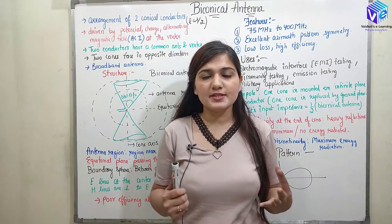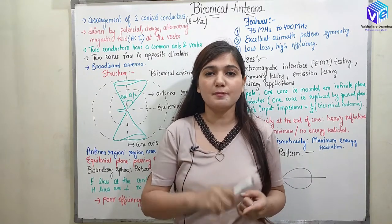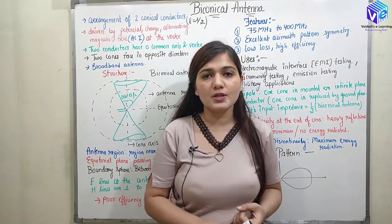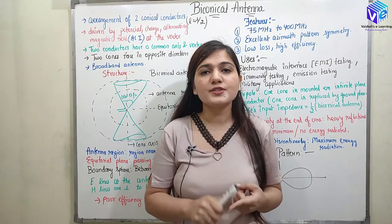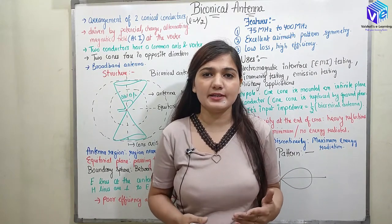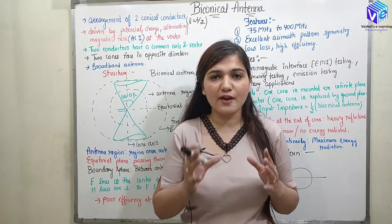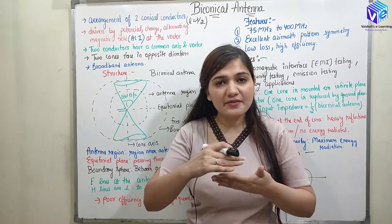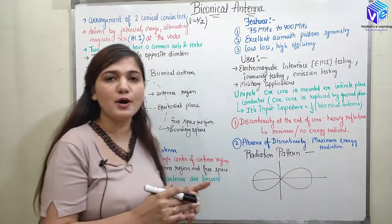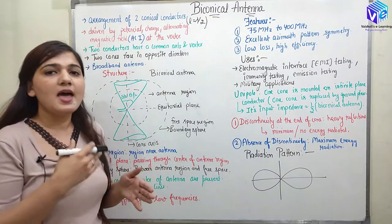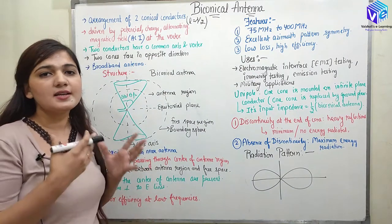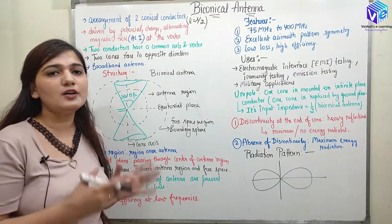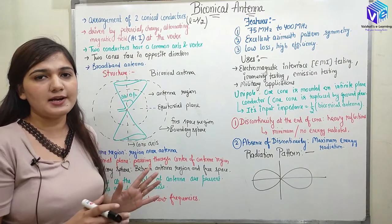As the name suggests, it has two cones — biconical means it has two cones. The two cones are of conductive material. We have two cones which are fed by the same feed line, which have the same vortex and which have the same axis. This type of structure is called the biconical antenna.